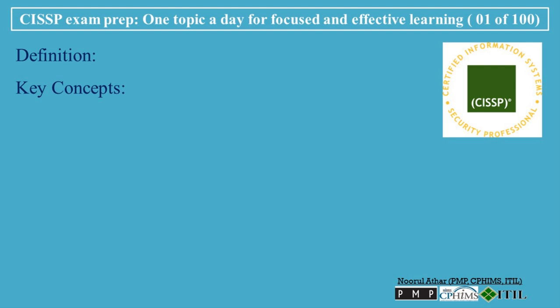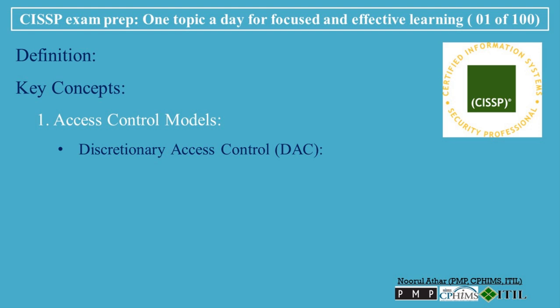Key Concepts. 1. Access Control Models. Discretionary Access Control (DAC): the owner of the resource determines who has access to it. This is flexible, but can be risky if owners don't manage permissions well.